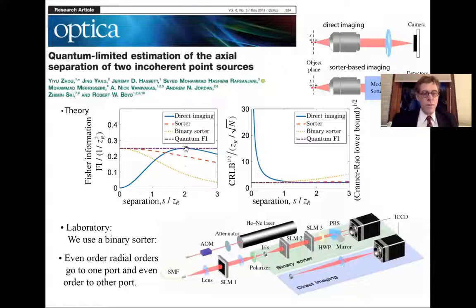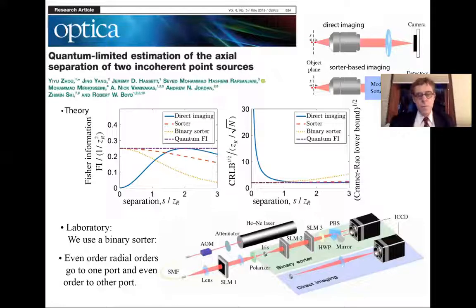What do I mean by a binary sorter? Our binary sorter separates the modes into the even order radial modes and the odd order radial modes. This is possible because in the past several years, people have developed methods for measuring the radial structure of, for example, a Laguerre-Gauss mode. So here's our experimental setup.